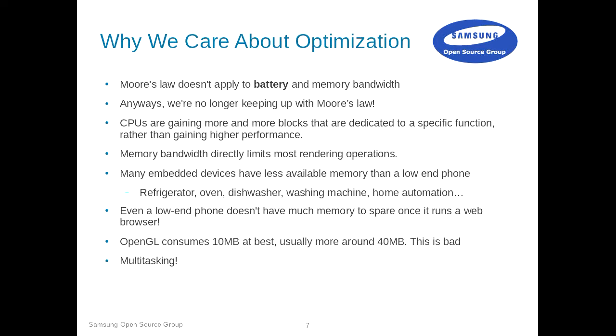We also care about optimization because that's where things are going long-term. A trend in System-on-Chip is that you have many dedicated blocks — like JPEG or H264 decompression — which are not really usable by your application as a general-purpose CPU. These dedicated blocks don't improve general application performance. They may help efficiency by using the hardware JPEG decoder, but overall you don't get more free CPUs.